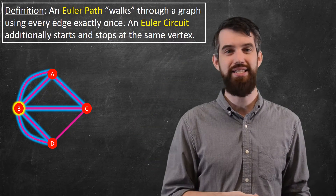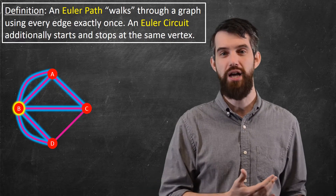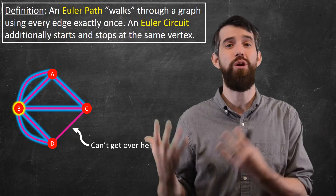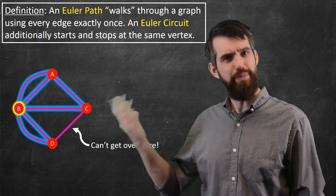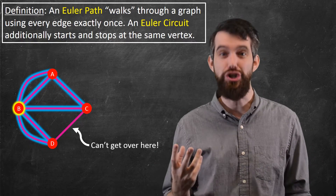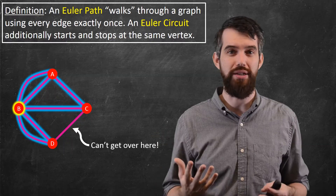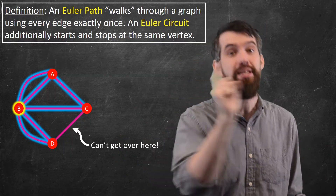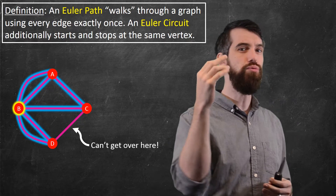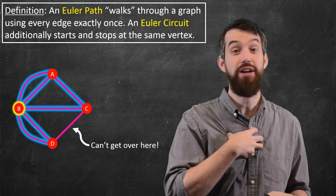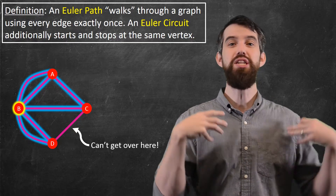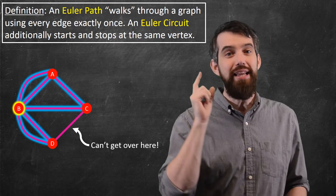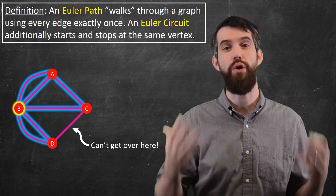If I wanted to get from D to C, I'd have to go over an edge I've already used. So I can't actually get there via an Euler path or an Euler circuit. You can pause the video and see whether you can find some path that hits everything. But it turns out it is impossible, and we're going to use a little theorem about Euler circuits.